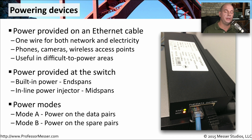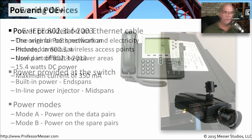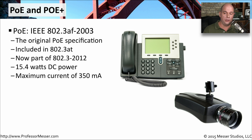You'll generally see two different kinds of modes for Power over Ethernet devices. One is Mode A, where the power is being placed on exactly the same wires that the data is traveling on. This uses a functionality called phantom power, and it means that you can run your data and your power over exactly the same copper. Mode B is one where data is on one set of pairs and the power is running on a completely different set of pairs, separating the power and the data inside the same cable.